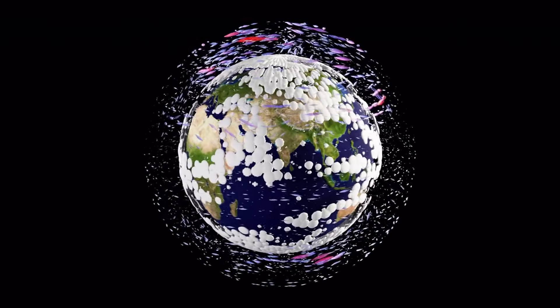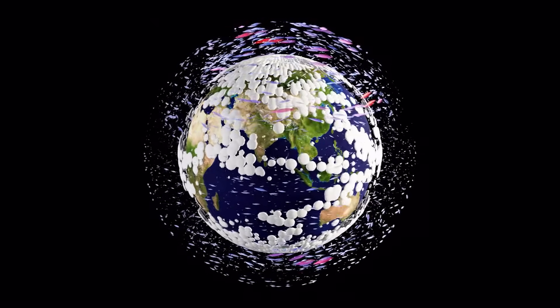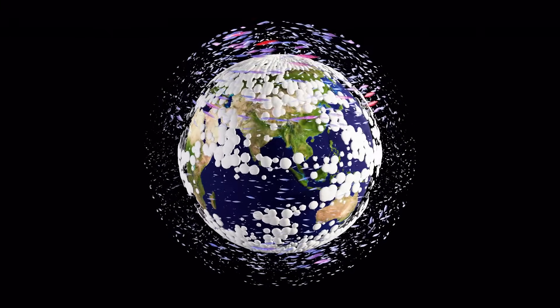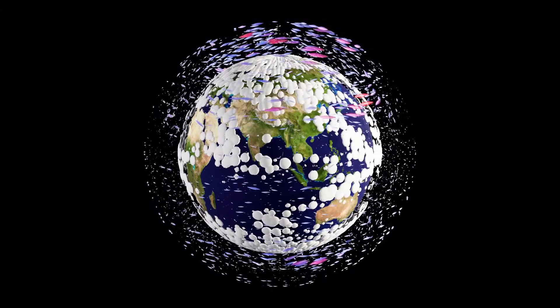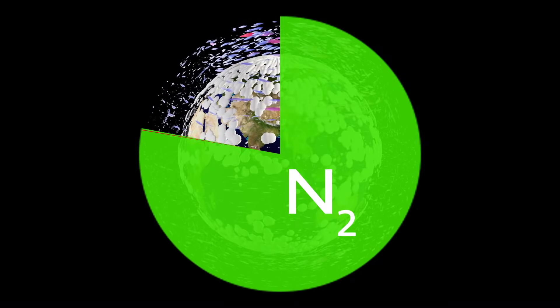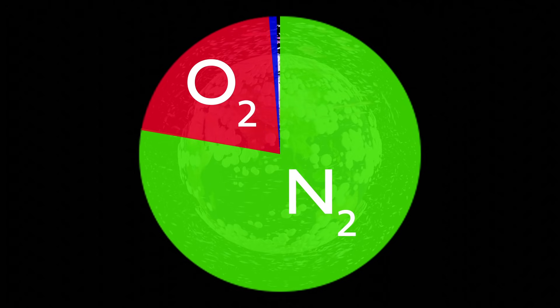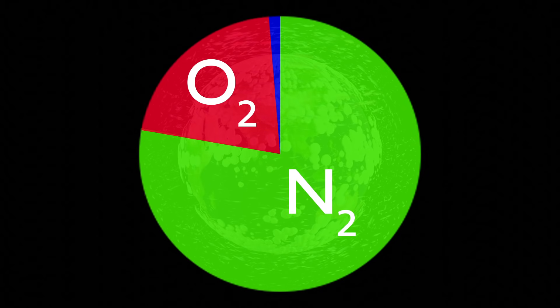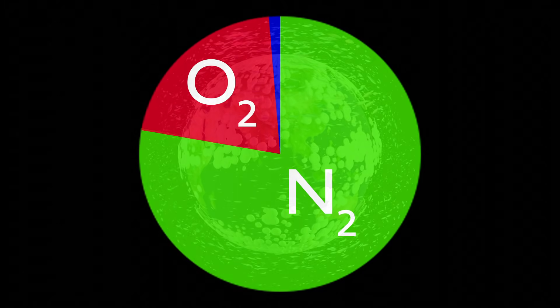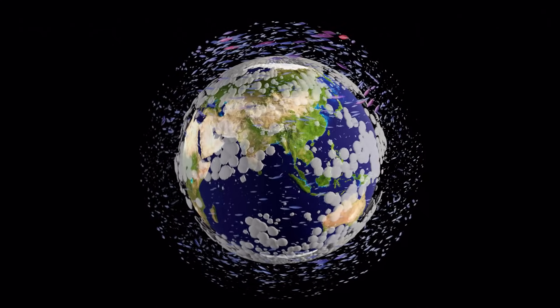First of all, what is the atmosphere? Basically, it's a bunch of gas — mostly nitrogen, some oxygen, barely any other trace gases — all clinging to the Earth's surface in a thin layer.